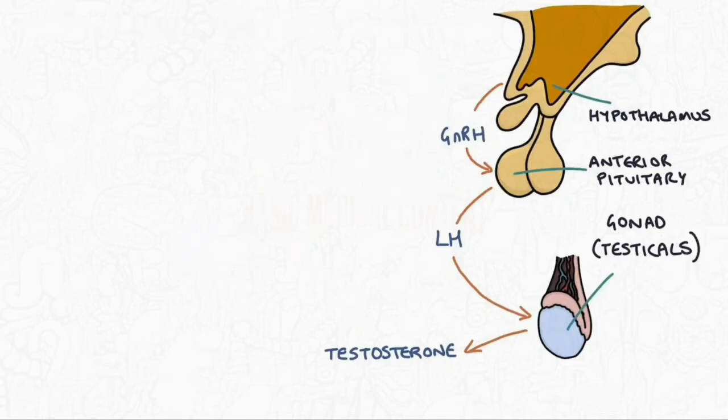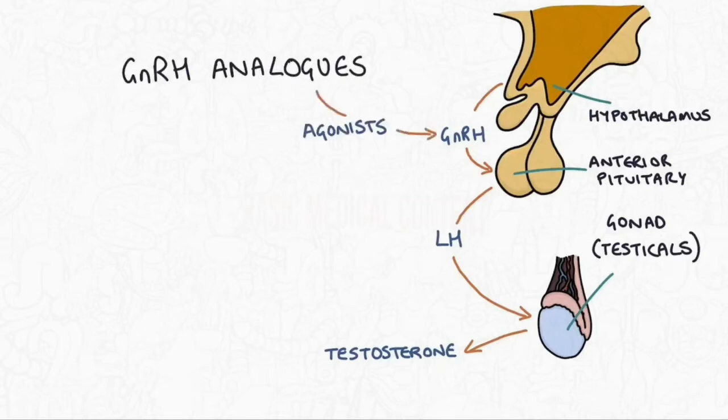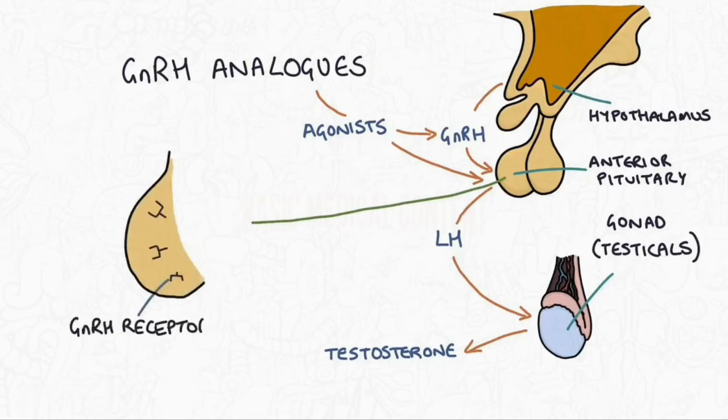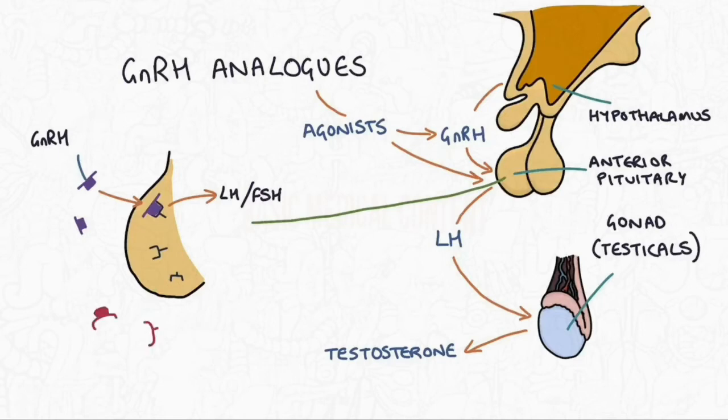So now let's look at how the GnRH analogues work. These medications are agonists of the receptors of GnRH on the anterior pituitary gland. The anterior pituitary gland has receptors that sit and wait for GnRH hormones to come along and stimulate them and it's them that trigger the release of the LH and FSH or the gonadotropins. These receptors on the anterior pituitary gland are the target for these GnRH agonists. So these agonists act exactly like the GnRH hormone and target these receptors and stimulate them to produce LH and FSH.